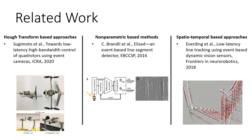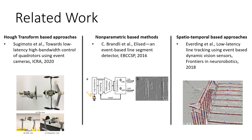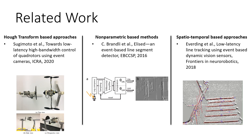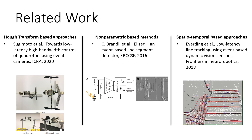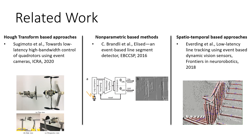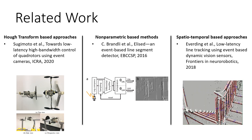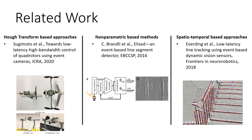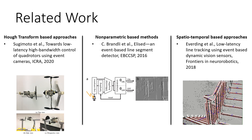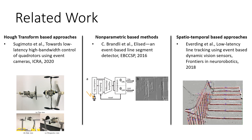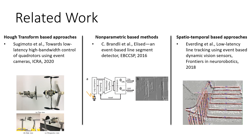Related work in line tracking using event cameras can be split into three different categories. The first category is Hough-transform-based approaches. These approaches don't fully leverage the asynchronous nature of event cameras. Searching through the parameter space on an event-by-event basis is computationally costly. A possible solution is to use a sliding window of events, which helps reduce the computational cost but introduces latency.